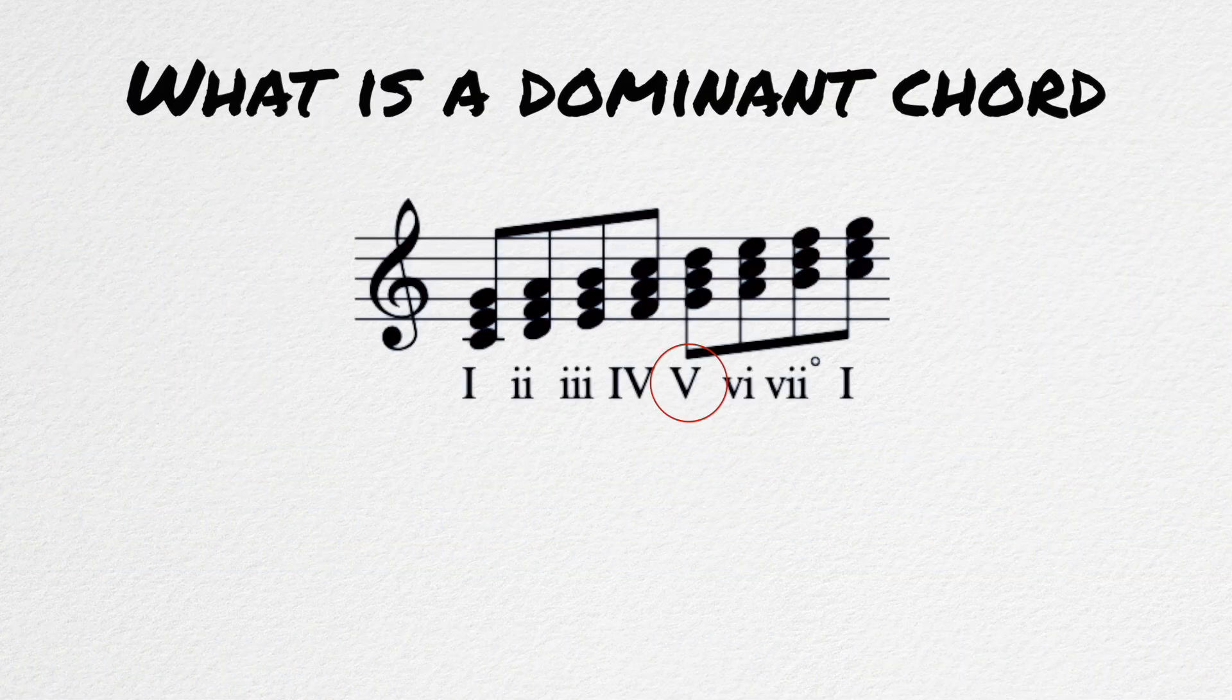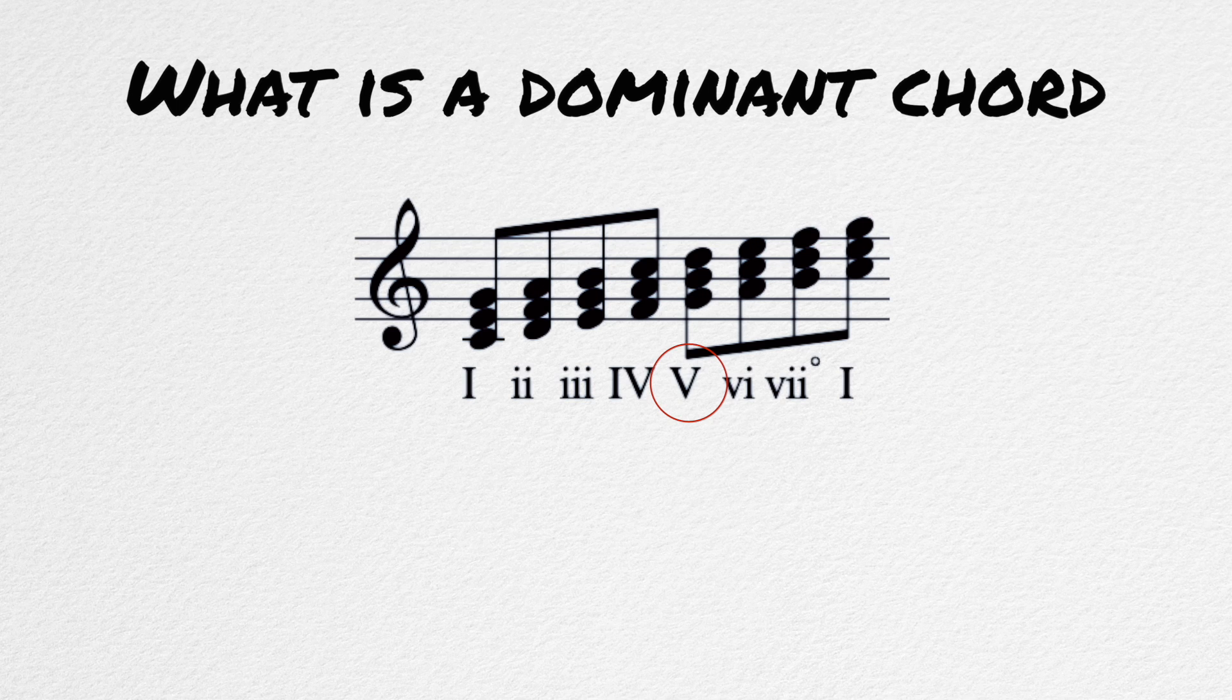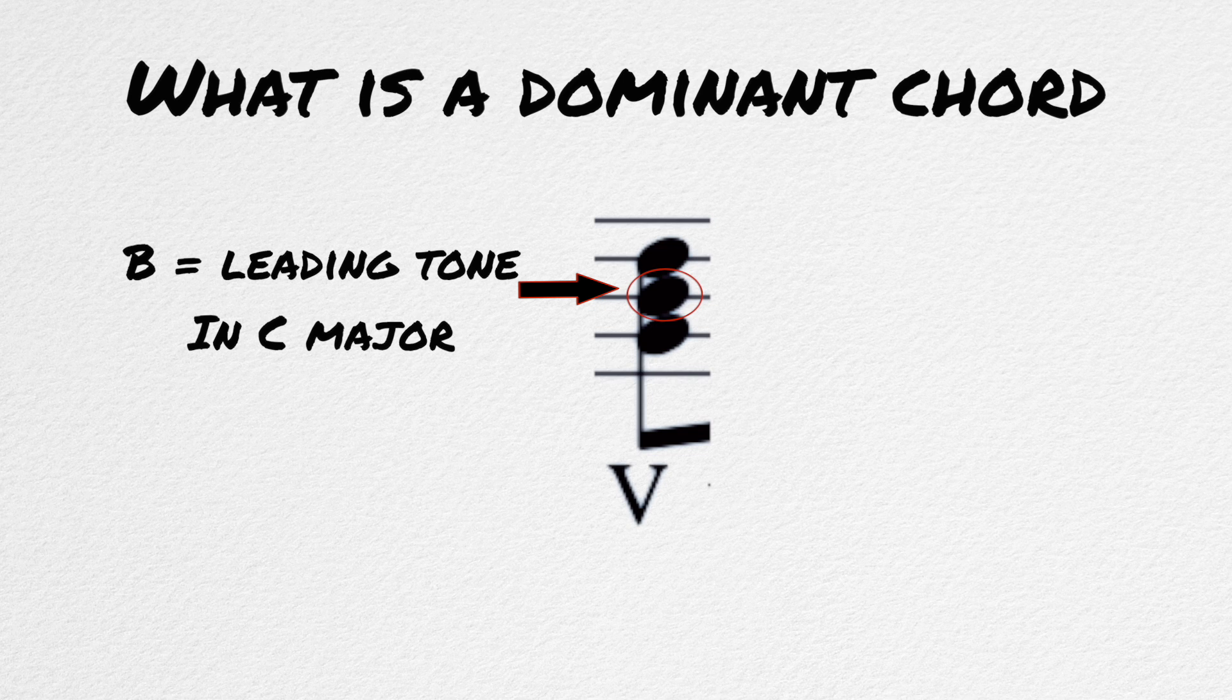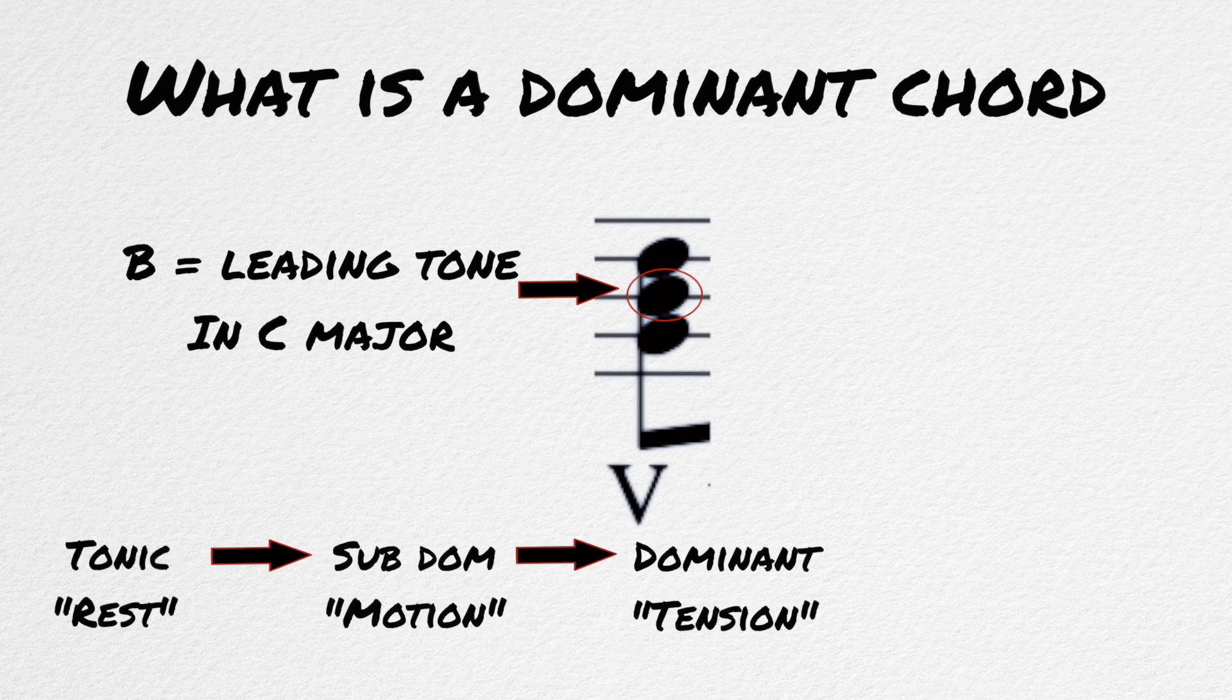What is a dominant chord? The dominant chord of any key is the chord that is built off the fifth scale degree. In the key of C, it's G, and in the key of A, it's E. Dominant chords always contain the leading tone, and its main job is to create tension in a chord progression and pull us back to the tonic.